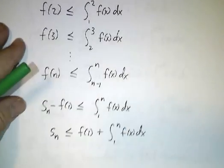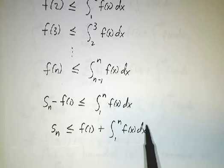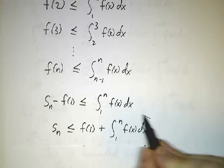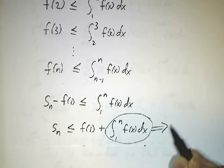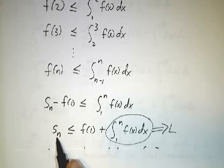Add f(1) to both sides. And you've got that the nth partial sum is bounded by f(1) plus this integral. And now let's take a limit as n goes to infinity. As n goes to infinity, this approaches sum number L. So all of the partial sums are bounded by f(1) plus L.